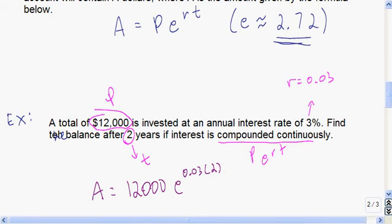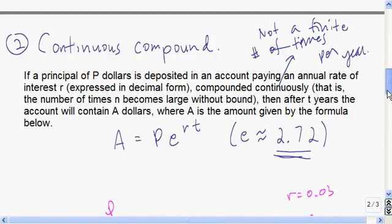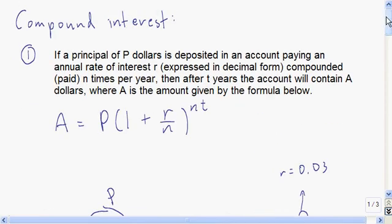Use the e button on your calculator — enter e caret, then parentheses around 0.03 times two. Press pause and plug that in. If you do, you'll get around twelve thousand seven hundred forty-two dollars and four cents. Those are the two financial formulas we'll study for applications of exponential functions.